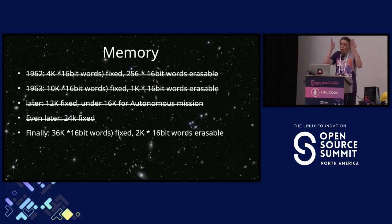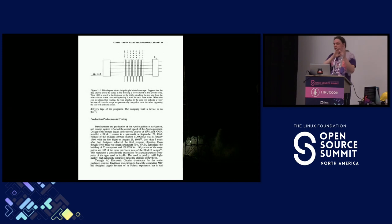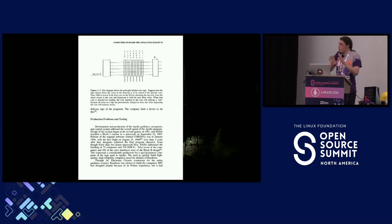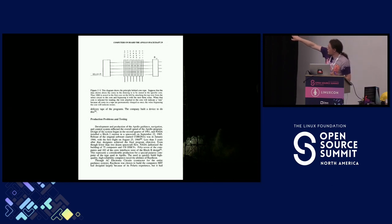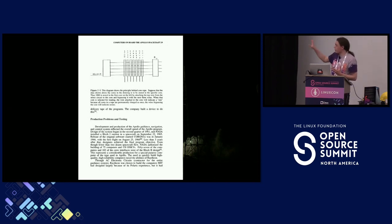The erasable memory was standard core memory, but the read-only storage was something called core rope — the same idea as core memory but done as rope, giving it higher storage density while making it a pain to manufacture and nearly impossible to reprogram. Data is literally written by threading wires through magnetically charged cores: threading through a core is a one, skipping a core is a zero. They literally had to figure out the program eight to ten months or a year ahead of time so that Raytheon could go and build it. In total, there were six modules of core rope containing 6,144 16-bit words.